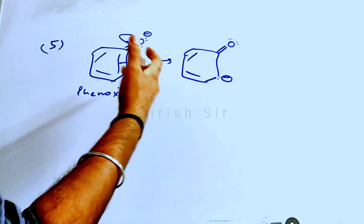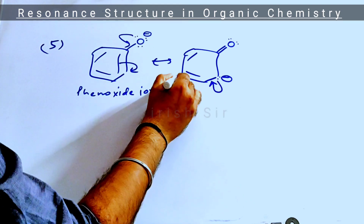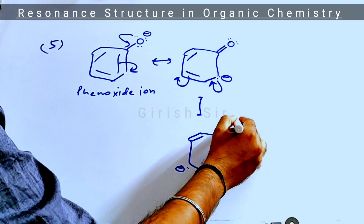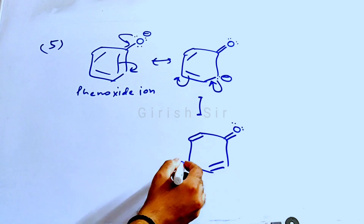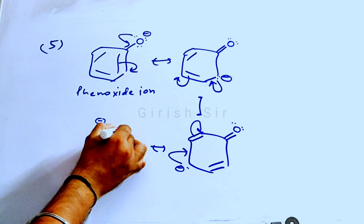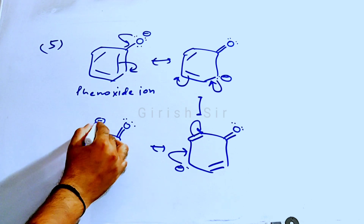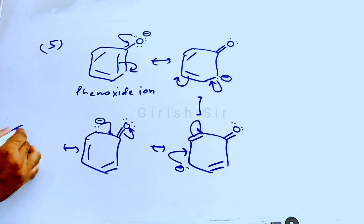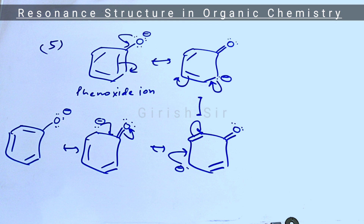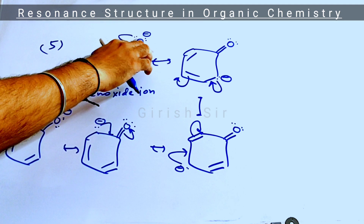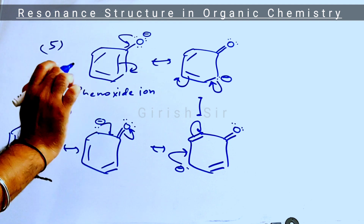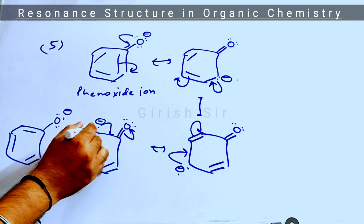Now we have to see if the lone pair can move further in the ring. This lone pair moves towards the next pi bond, which then breaks. Again, the lone pair moves towards the next pi bond and that pi bond breaks. Once more, the lone pair moves and the pi bond breaks. So this is how resonance takes place in phenoxide: the negative charge from the oxygen atom, due to resonance, appears at the ortho positions and the para position.